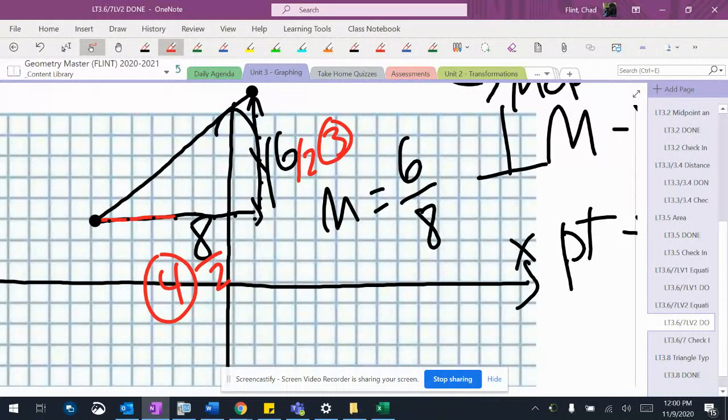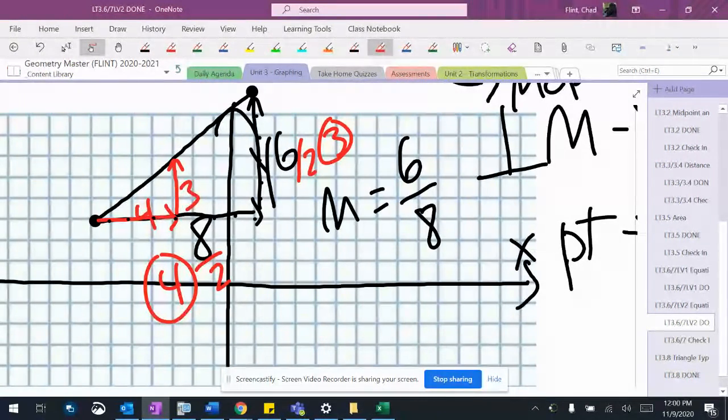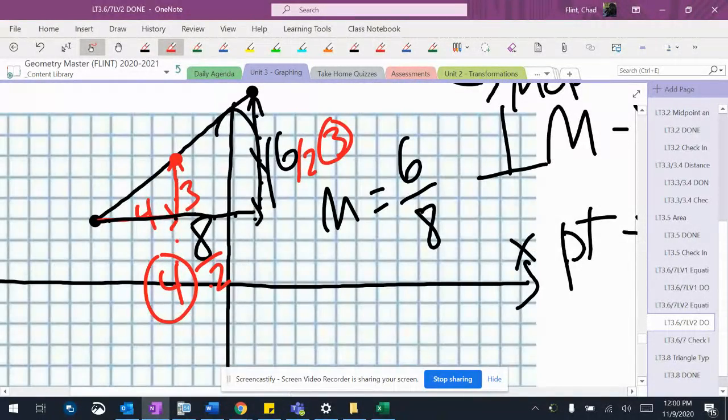And I'll get four and three. That will give me the location of my new point, which is negative three, six.